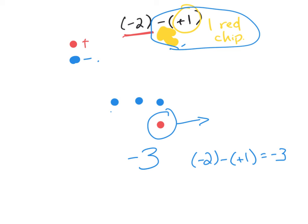Hopefully these give you a couple of examples. Essentially, if you're drawing things out, you can only add zeros — if you don't have enough chips, always add one of each positive and negative until you have enough pieces. Good luck, and if you have any questions, let me know.